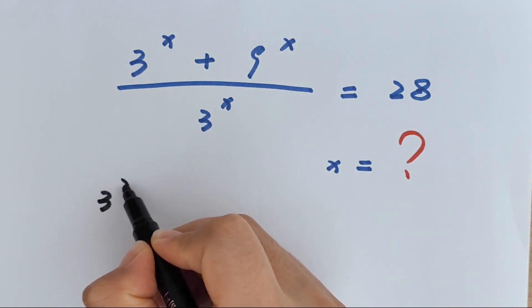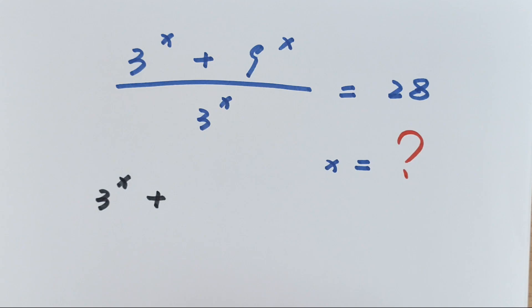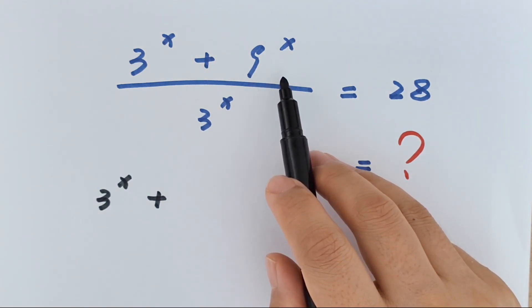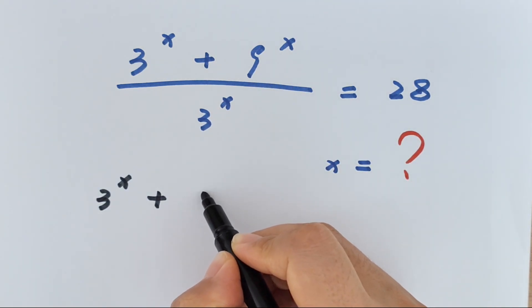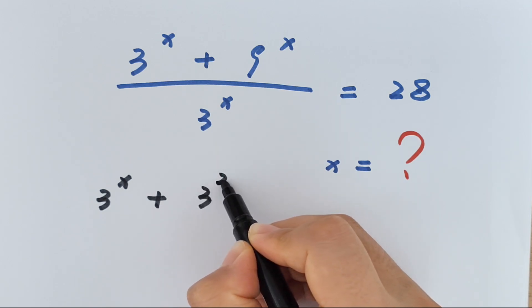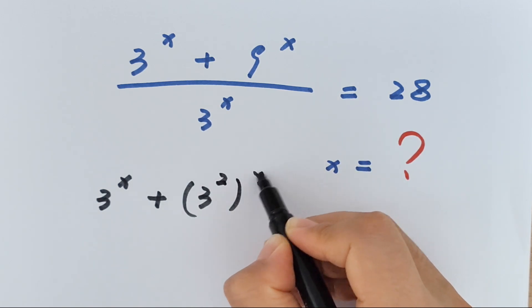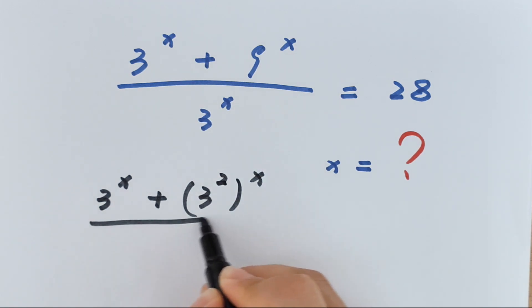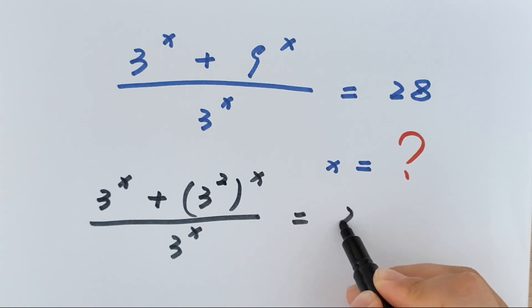3 to the power of x plus 9 to the power of x. 9 is 3 squared bracket to the power of x divided by 3 to the power of x equals 28.